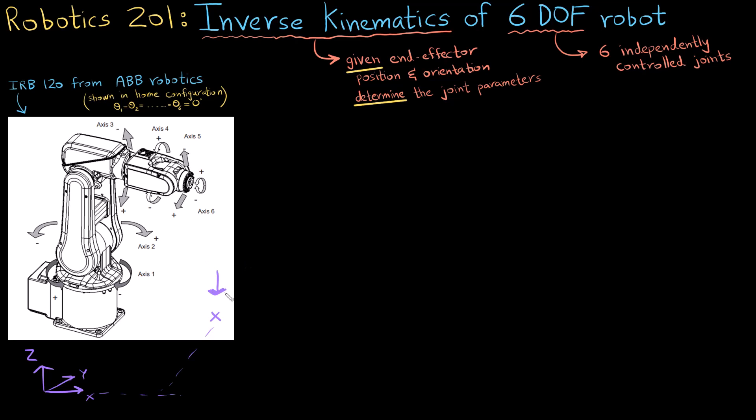So now we know the position and the orientation, now we would need to move backwards and figure out what motor commands do we need to give to the motors, what angles should the motors be at in order to achieve this position orientation and pick the object.